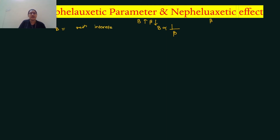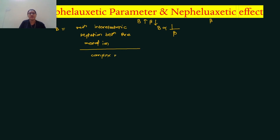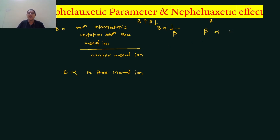The nephelauxetic parameter B determines the reduction in inter-electronic repulsion between the free metal ion and the complex metal ion. B is directly proportional to the free metal ion, and beta is directly proportional to the complex metal ion.